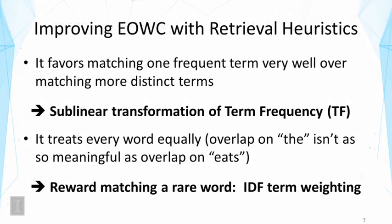To address the second problem, we can put more weight on rare terms. That is, we can reward matching a rare word. And this heuristic is called IDF term weighting in text retrieval. IDF stands for inverse document frequency. So now we're going to talk about the two heuristics in more detail.